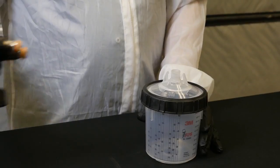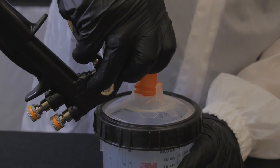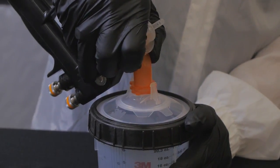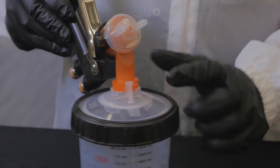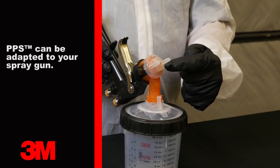Once the PPS cup is assembled, we are ready to attach the spray gun. With the PPS cup sitting on a bench, take your spray gun and push it into the lid spout and rotate it one quarter turn to lock the gun and PPS cup together.